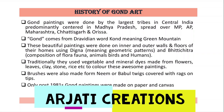These beautiful Gond paintings were done on both the inner and outer walls and floors of people's houses. They used Digma — geometric patterns like lines, dots, and spirals — and Bitti Chitra, meaning they would depict flora, fauna, animals, birds, and humans. Traditionally, the Gond people would use vegetable and mineral dyes made from natural flowers, leaves, clay, stone, rice, and turmeric to make various colors.